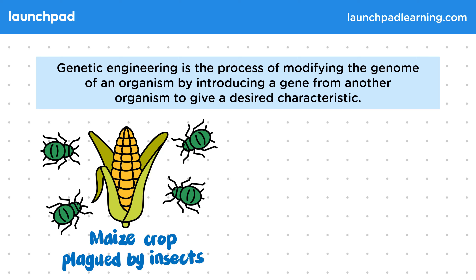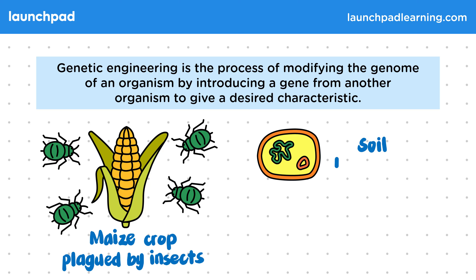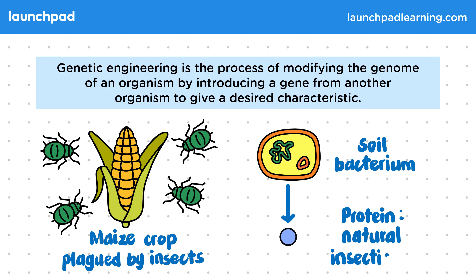To do this, scientists would look for another organism that already has this trait. In fact, scientists have found a soil bacterium that produces a protein that is a natural insecticide. So how can we genetically engineer this maize using this natural protein?